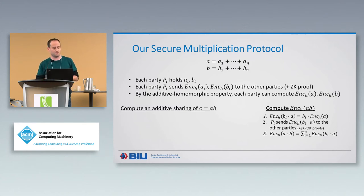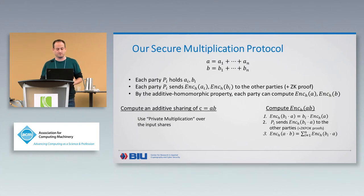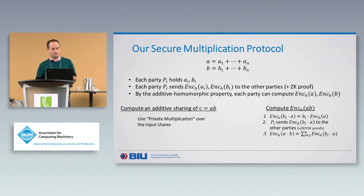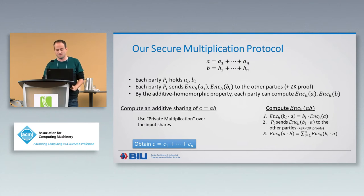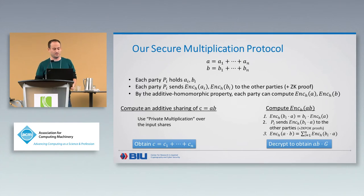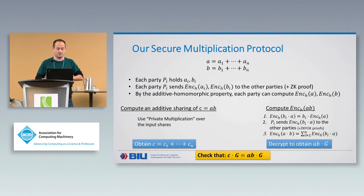Since decryption only gives us A·B times the generator, we run in parallel another protocol to multiply the additive shares. The key observation is that we only need a protocol guaranteeing privacy — we only need to prevent leaks of information, but don't need correctness guaranteed by this sub-protocol alone. At the end, the parties hold an additive sharing of some value C. If parties behaved correctly, it's the correct output; otherwise we use the encryption from the right-side protocol to validate correctness. We decrypt to obtain A·B times G and run a simple check — if the equality holds, the parties open the sharing; otherwise they abort.